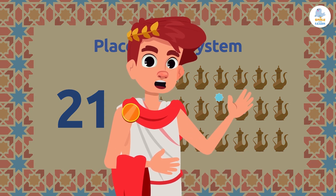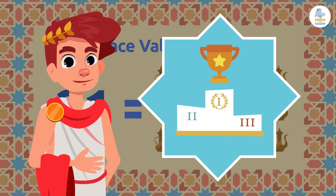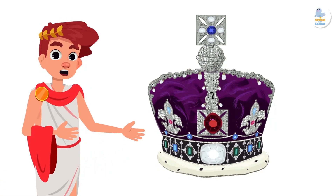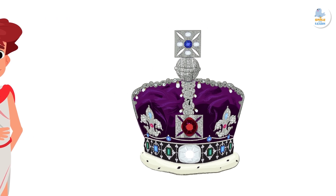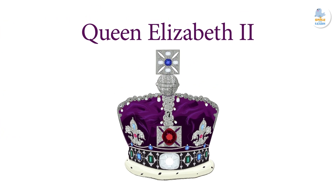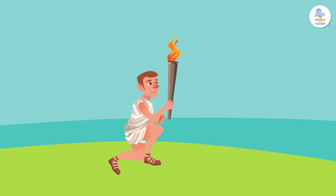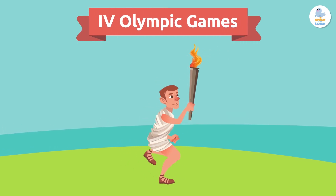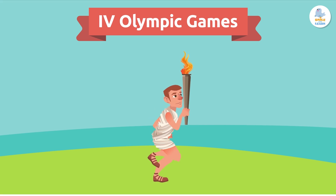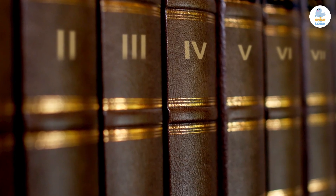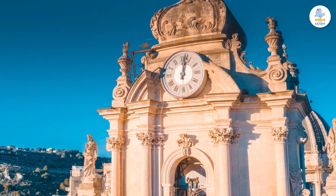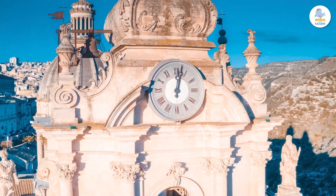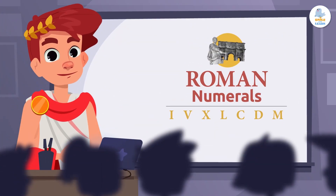And today we still use Roman numerals for some things — let's have a look! We use Roman numerals in the names of kings and queens, like Queen Elizabeth the Second. We can also see them in the names of sporting events, like the Olympic Games or the Super Bowl. People also use them to number the volumes or parts of some books. We can even see them on some clocks — have you ever seen a clock with Roman numerals? Lots of old clocks have them!